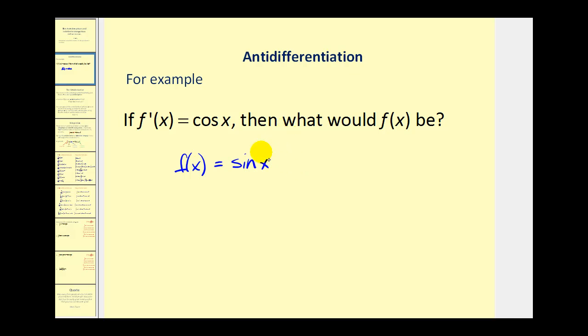We could add any constant. For example, we could have f(x) equals sine x plus one, or plus two, or any constant. So what we could do is say f(x) equals sine x plus c, where c would be any constant. And we call this function the anti-derivative of f(x) equals cosine x.